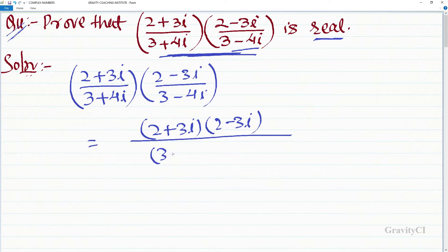(2 plus 3 iota)(2 minus 3 iota) upon (3 plus 4 iota)(3 minus 4 iota). A plus B into A minus B equals A square minus B square, according to this identity.